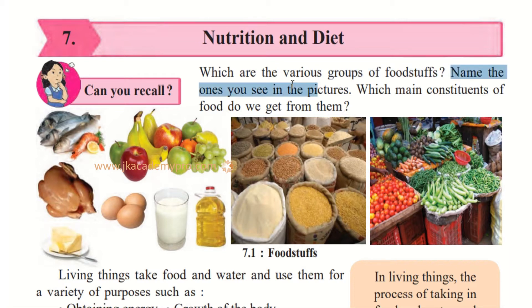And can you name the ones you see in the picture? Here there are different food items given. There is some fish, there is some meat, butter, eggs, there are different kinds of fruits, there is a glass of milk, oil, different types of grains and we have our vegetables.